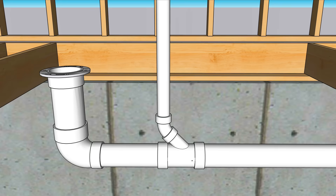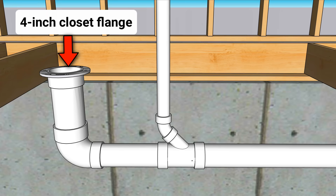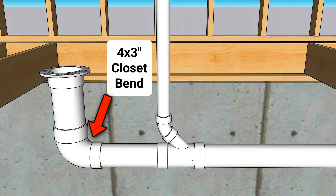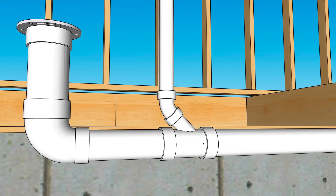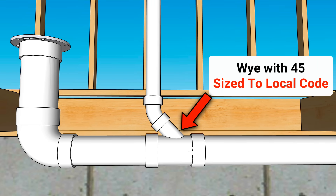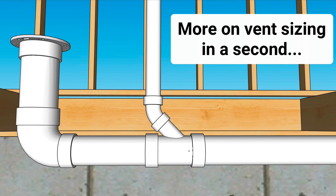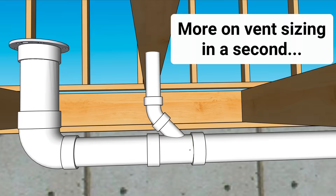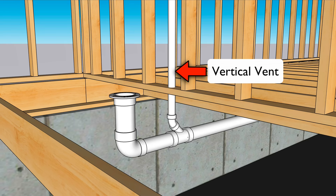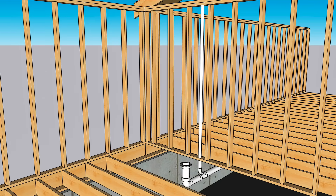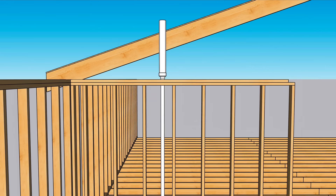Here's the basic overview. You're looking at a four inch closet flange that connects to a short piece of four inch PVC that drops right into a four by three closet bend. The closet bend is four inches on the inlet and three inches on the outlet. Immediately downstream is a Y with 45 that gets sized to local code. Note this Y is installed directly under a wall, which allows the toilet's vent takeoff to be vertical — and that's important. This vent continues up the wall and can either tee into the home's existing venting system or terminate through the roof on its own.